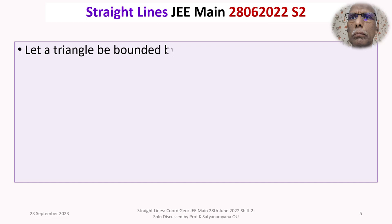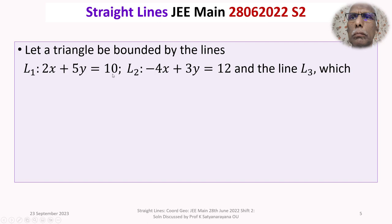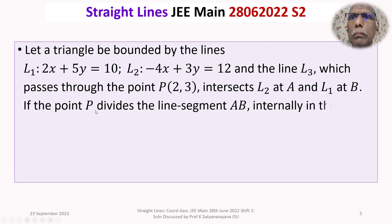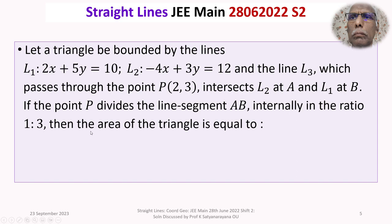The given question is: let a triangle be bounded by the lines L1 given by 2x plus 5y equals 10, L2 given by minus 4x plus 3y equals 12, and the line L3 which passes through the point P, intersects L2 at A and L1 at B. If the point P divides the line segment AB internally in the ratio 1 is to 3, then the area of the triangle is equal to?